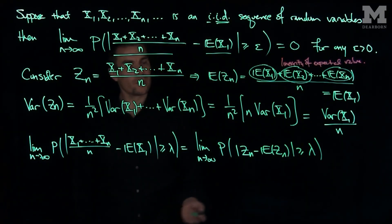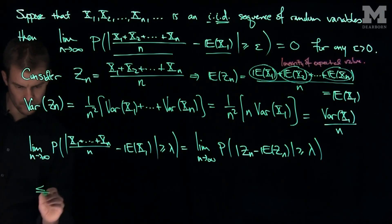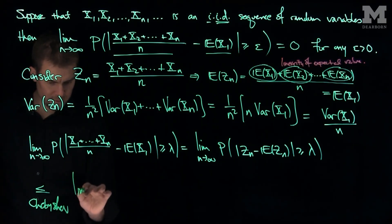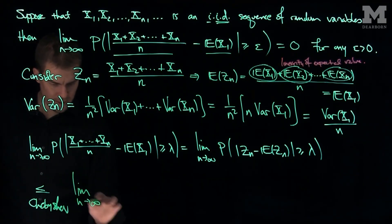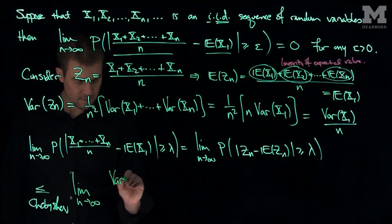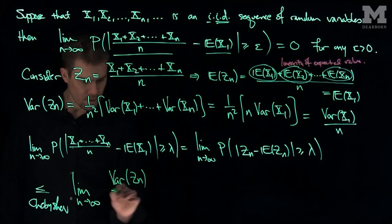And now we can use the Chebyshev inequality. This is less than or equal to by Chebyshev's inequality, the limit as n goes to infinity of the variance of zn over epsilon.